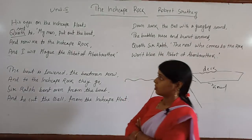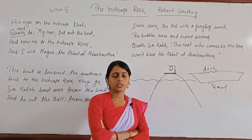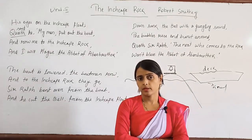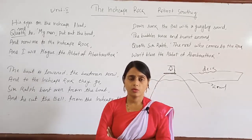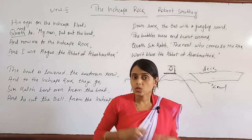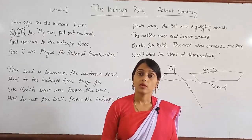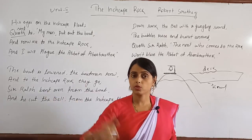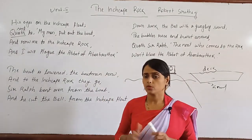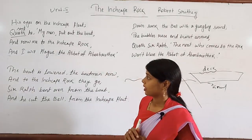Sir Ralph said, 'Row me to the Inchcape rock.' His intention was to harm the Abbot. Though it wasn't practically possible to harm the Abbot directly — he didn't live on the Inchcape rock — Sir Ralph was going to do something with the Inchcape bell to indirectly harm the Abbot. He was unable to bear the respect being given to the Abbot. The boatman rowed, and they went to the Inchcape rock.